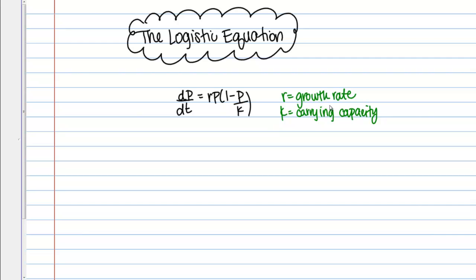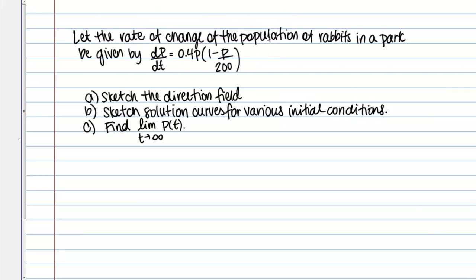We'll actually talk about that a little more later when we look at a specific example. So now let's look at a specific example. We're told: let the rate of change of the population of rabbits in a park be given by dp/dt equals 0.4p times 1 minus p over 200. We're asked to do several things: sketch the direction field, sketch solution curves for various initial conditions, and find the limit as t goes to infinity of p of t. Now I mentioned that this is an autonomous differential equation, and there are certain steps you can follow to make sketching the direction field pretty straightforward.